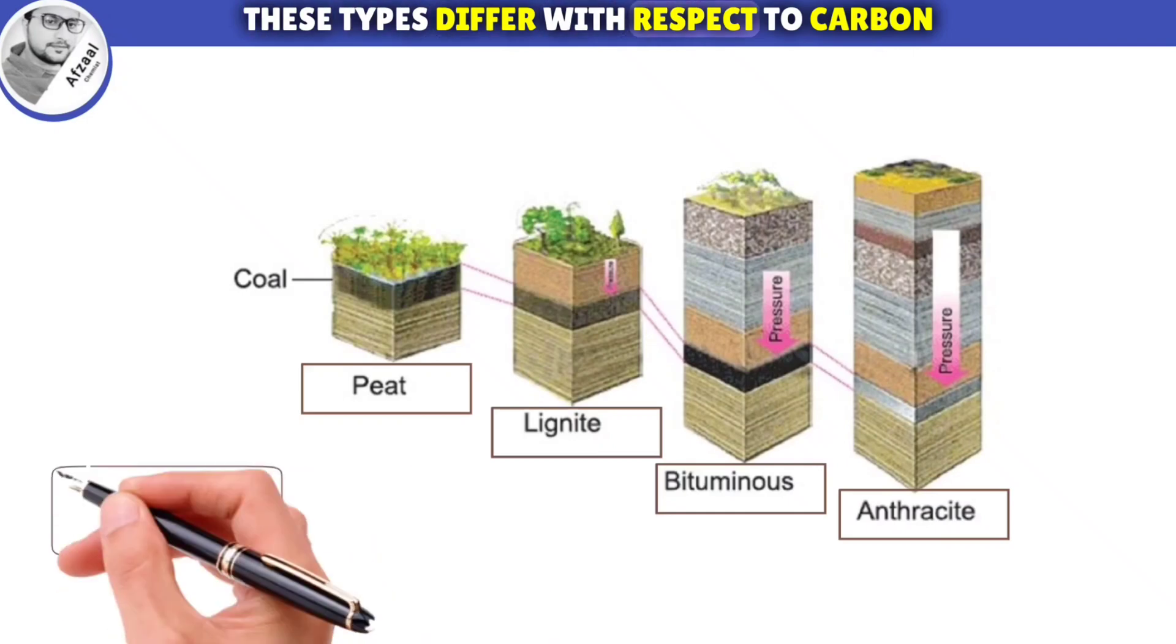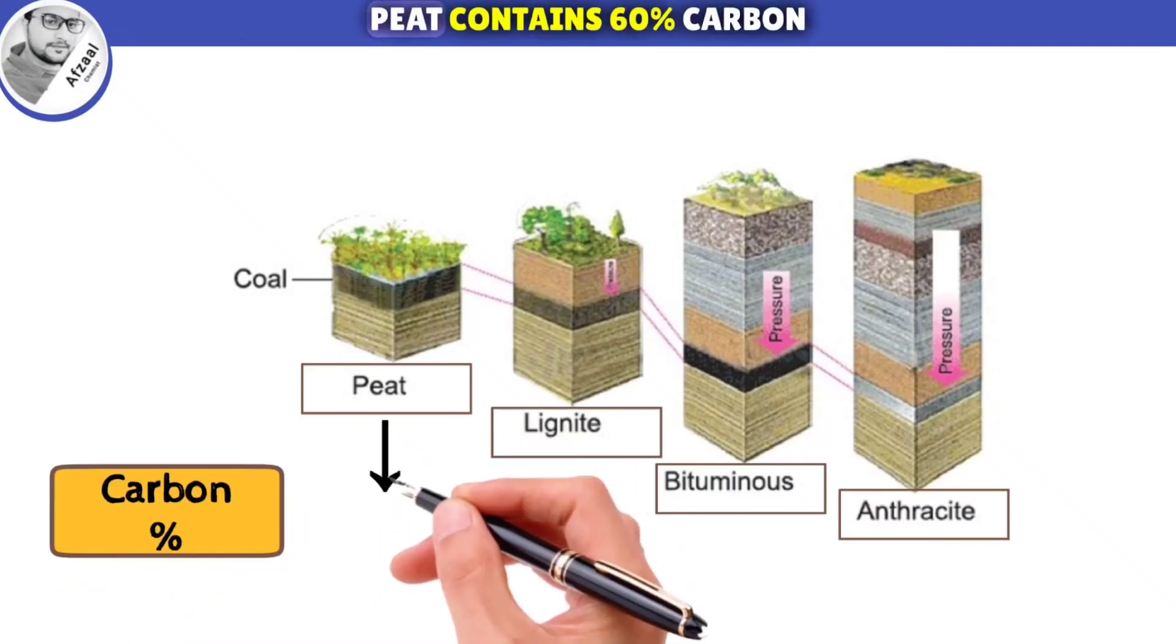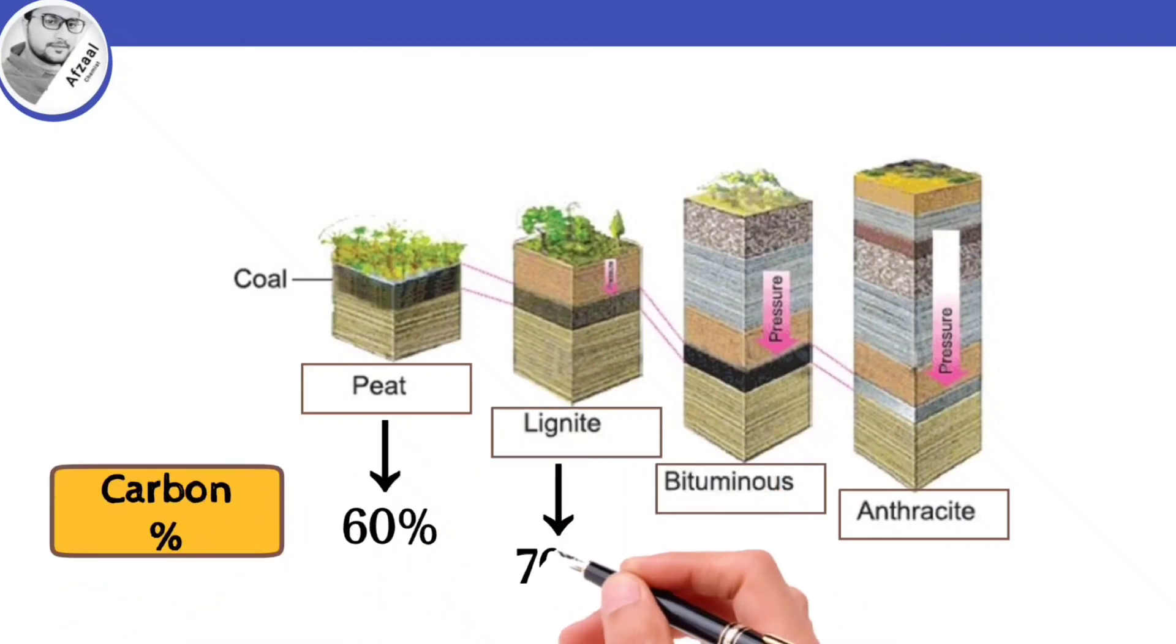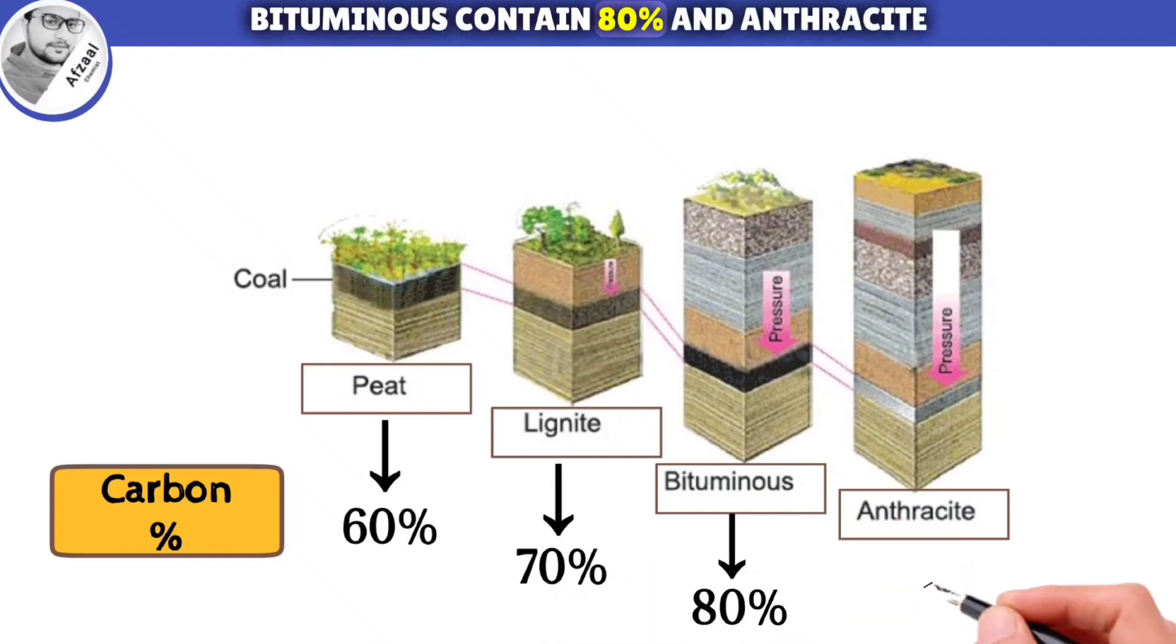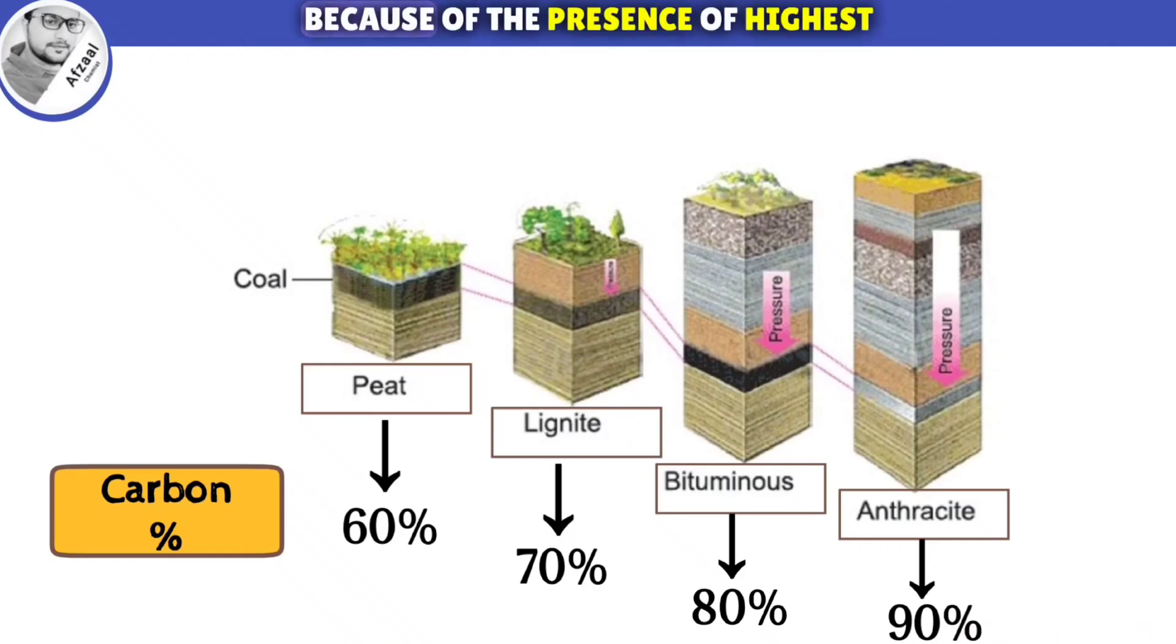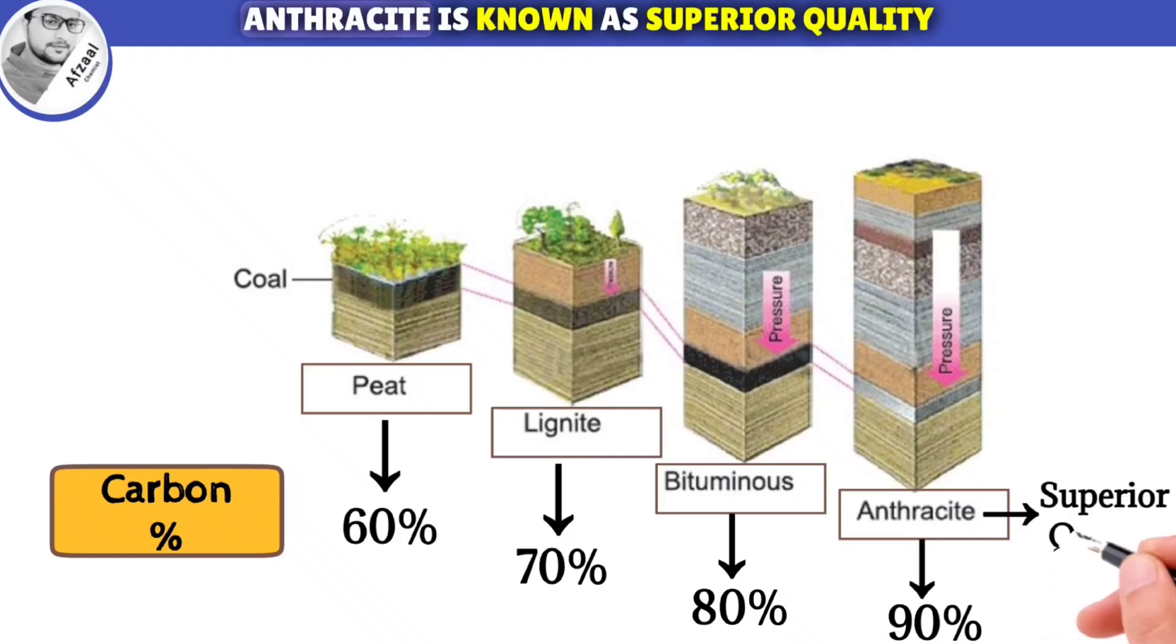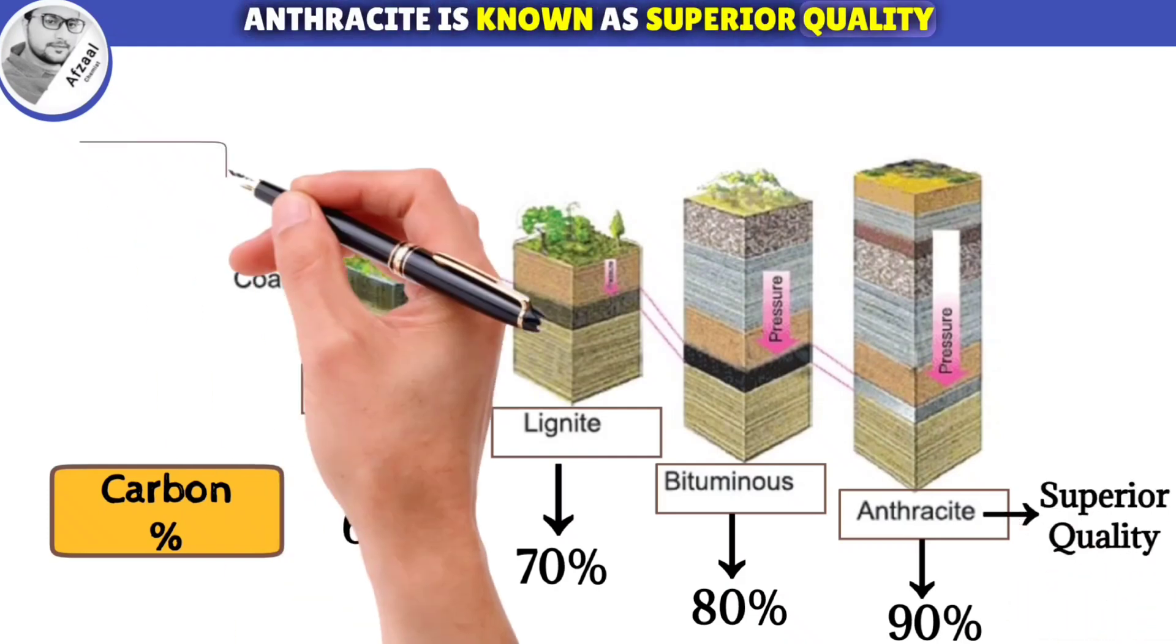These types differ with respect to carbon content. Peat contains 60% carbon. Lignite contains 70%. Bituminous contains 80%. And anthracite contains 90% carbon content. Because of the presence of highest percentage of carbon, anthracite is known as superior quality coal.